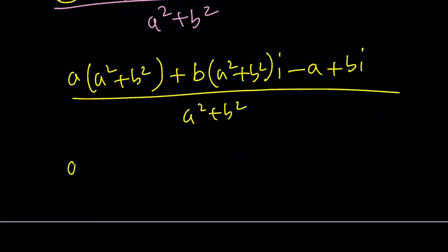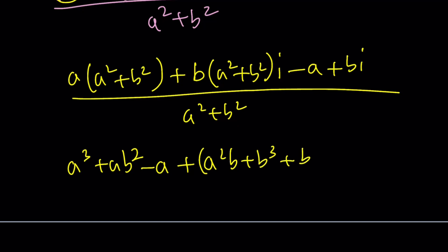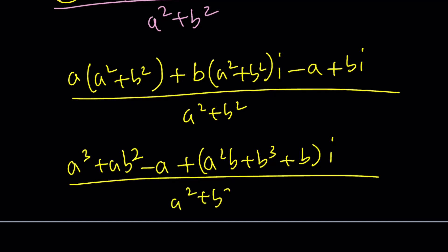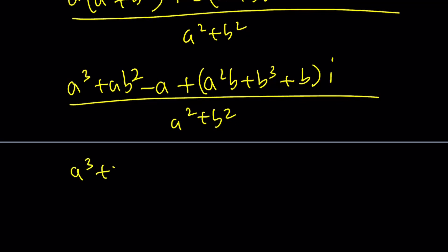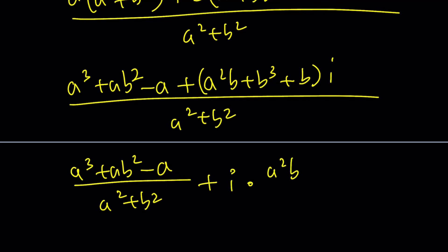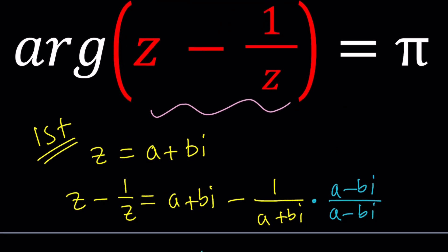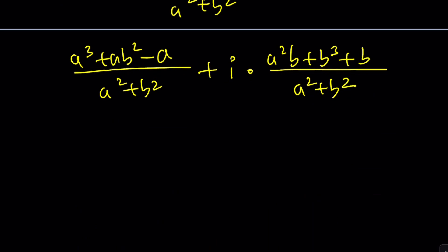Multiply A by A squared plus B squared and multiply B by A squared plus B squared. The real part is going to be A cubed plus AB squared minus A, and the imaginary part is A squared B plus B cubed plus B, times I, all over A squared plus B squared. Now we can write this number as (A cubed plus AB squared minus A) over (A squared plus B squared) plus I times (A squared B plus B cubed plus B) over (A squared plus B squared). Now here's where the argument comes into play. Let's call this number W — we now know that argument of W is pi.